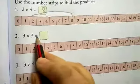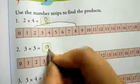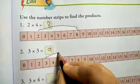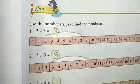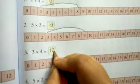3 into 3, 3 times 3 is 9. 3 into 4, 3 times 4 is 12.